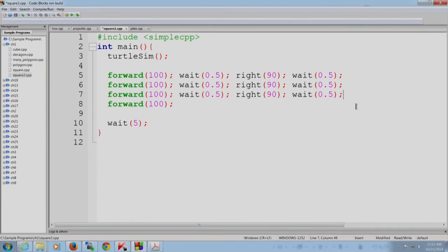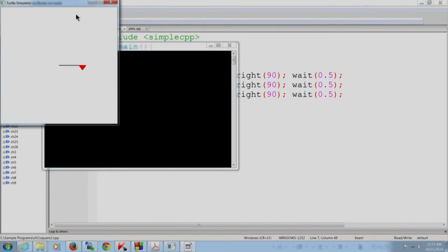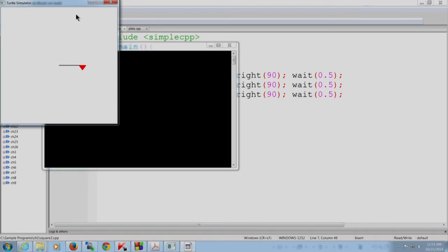So as you can see, I have taken the program that I showed to you and I have loaded it into the code blocks IDE along with the wait statements. So now I am going to compile and run it. As you can see, the turtle went forward and then turned and did this and indeed drew a square on the screen.